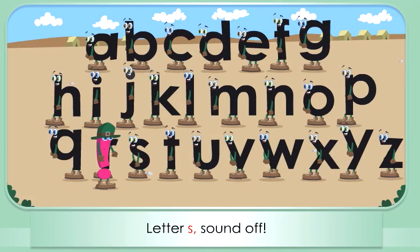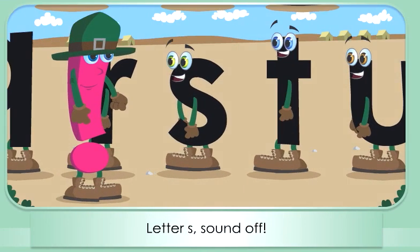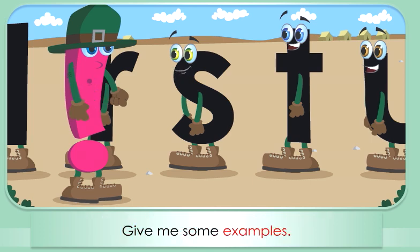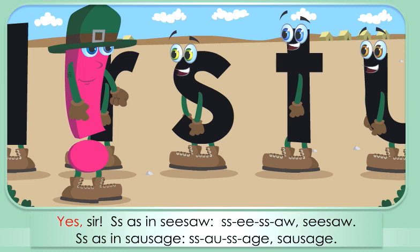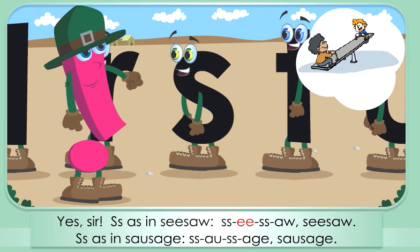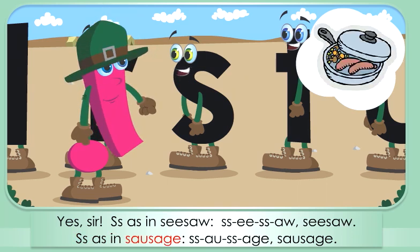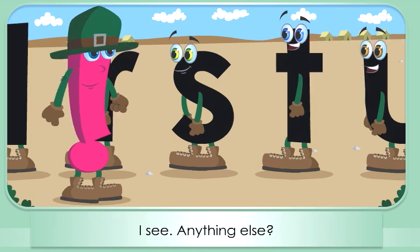I'm the letter S. I am a consonant. I make the S sound. Give me some examples. Yes sir — S as in seesaw, S-E-S-A, seesaw. S as in sausage. Sausage. I see.